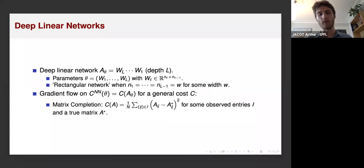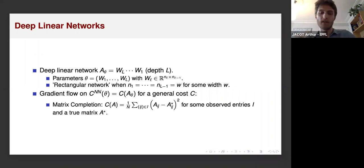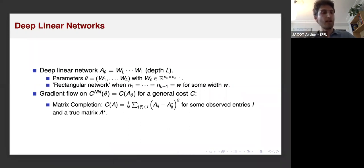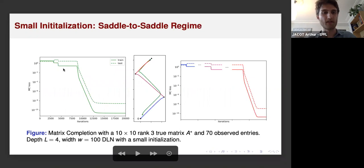Of course, we cannot expect to have a fast algorithm to exactly recover this low-rank matrix, but we can be interested in how different algorithms are able to approximate this low-rank solution. I will explain how neural networks in a certain setting can actually do that, at least to some degree. In linear networks there is a transition between regimes: in the lazy regime you cannot expect any generalization in this matrix completion setting. That lazy regime roughly corresponds to a very large initialization, so instead we focus on the limit where the norm of the parameters at initialization becomes very small.